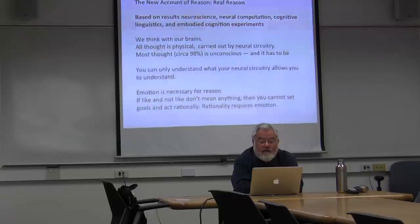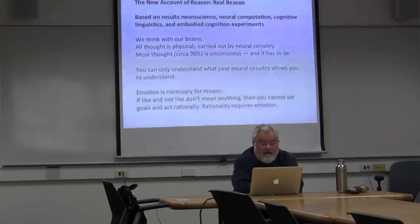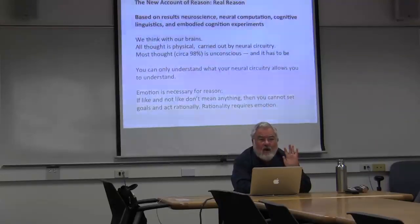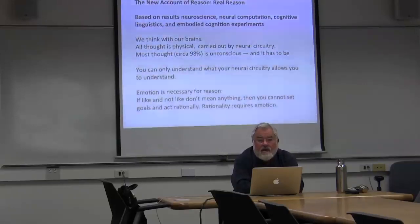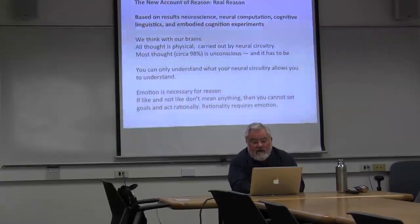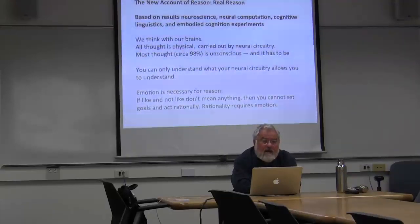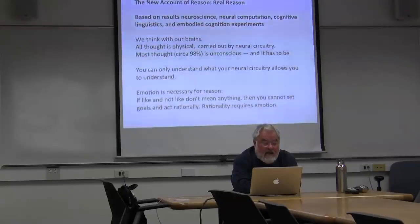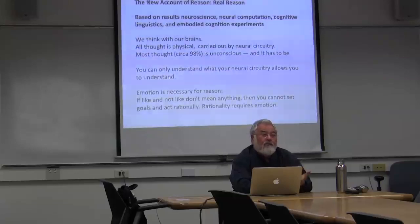You can only understand what the neural circuitry in your brain allows you to understand. This is particularly the case in political reasoning, but it's true in many other things. Some people still believe in enlightenment reason and can only think in terms of that 17th century view. The idea that one does think in other ways, mostly unconsciously, is something a lot of people, even in the academic world, can't comprehend. Emotion turns out to be necessary for reason — Tony Damasio showed this in the book Descartes' Error.